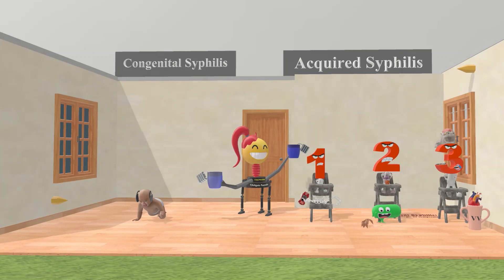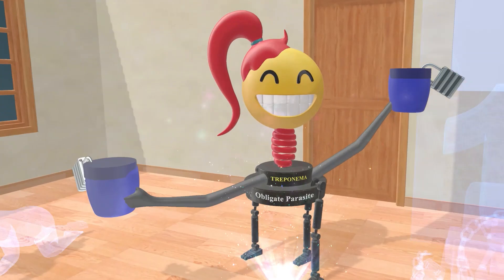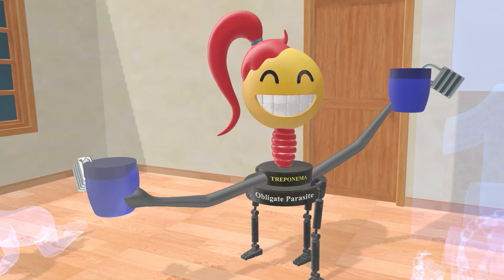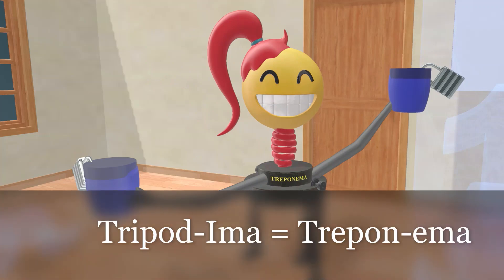Welcome to our scene on Treponema pallidum and syphilis. In this scene, we see the tripod mom — she has three legs, so she's a tripod and she's a mom, or we can call her an 'ima', as ima means mom in Hebrew. So she's the tripod ima — tripod ima for Treponema.